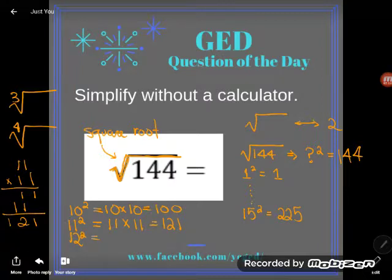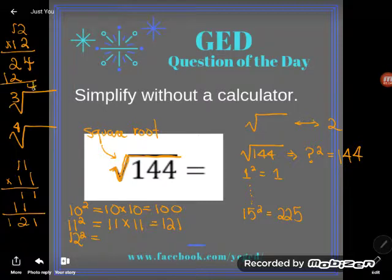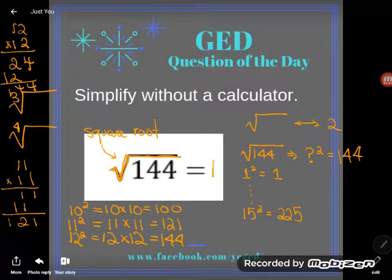Now I'll try 12 squared, 12 times 12. See why I'm asking you to memorize it? Guessing and checking is not a fun math method. 2 times 2 is 4, 2 times 1 is 2. I get 2, and I do see that 12 times 12 is 144. So what number times itself equals 144? It's 12.